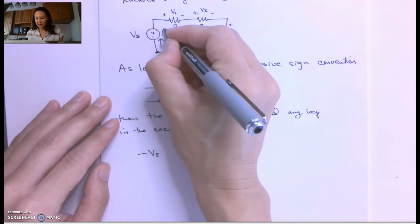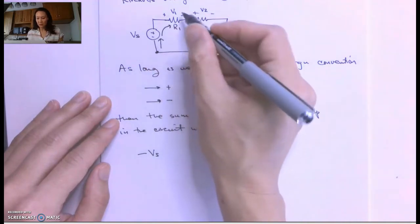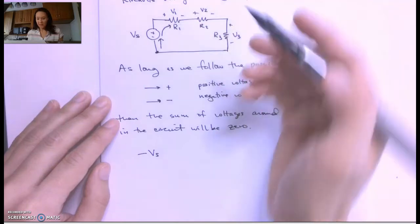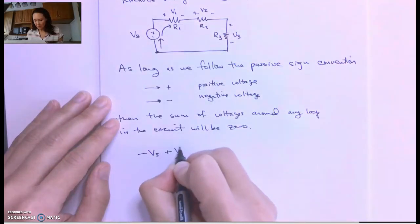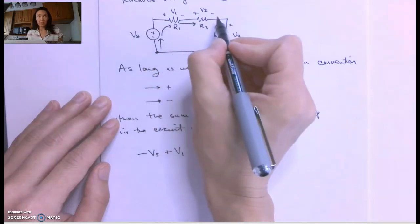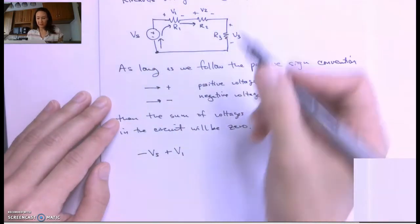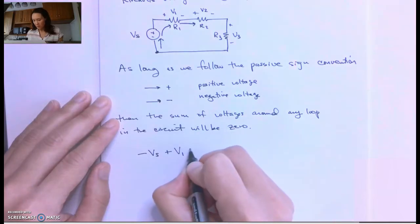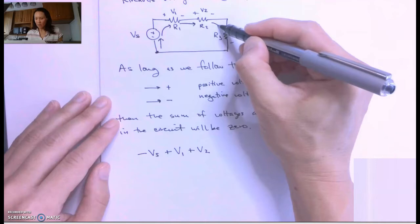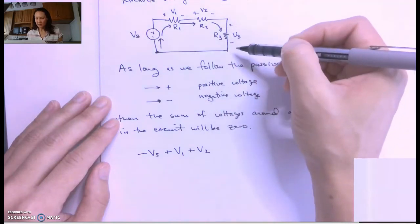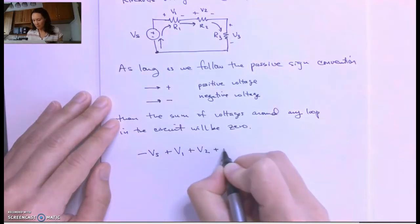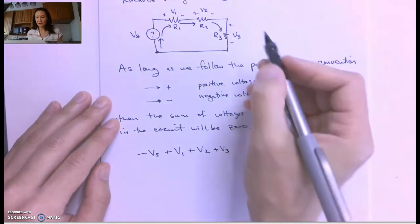Now I pass through Vs, I'm going to encounter this V1 voltage drop. I'm entering through the positive side, so this is going to be a positive V1. I continue on to the second resistor. The voltage drop across the second resistor is V2, so this will be plus V2. And then I continue on down here, and now I'm going to encounter the voltage drop across the third resistor. So that will be a plus V3 by the passive sign convention.